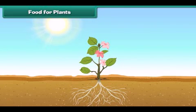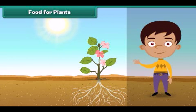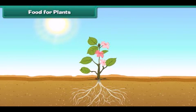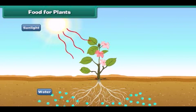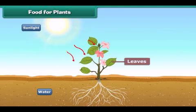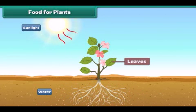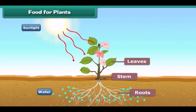Let us now understand where plants get their food. Plants make their own food with the help of sunlight. Plants take water from the soil and prepare food in their leaves. The plant takes up some part of food and the rest is stored in its roots, stem, leaves and seeds.